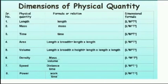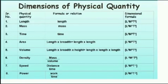Now we will summarize the dimensions of physical quantities. Length: formula is length, dimensional formula is [L¹, M⁰, T⁰]. Mass: formula is mass, dimensional formula is [L⁰, M¹, T⁰]. Time: formula is time, dimensional formula is [L⁰, M⁰, T¹].